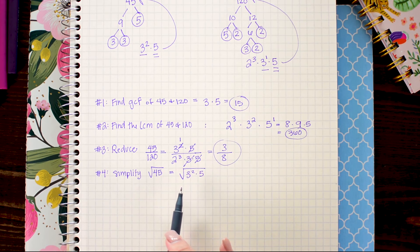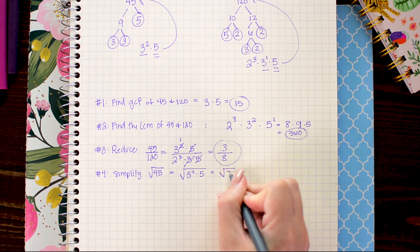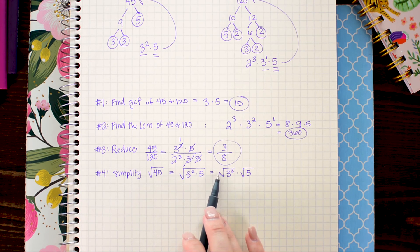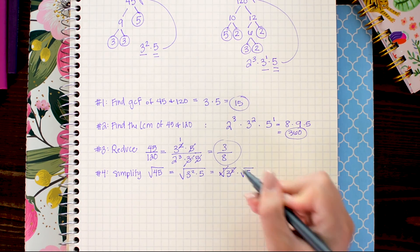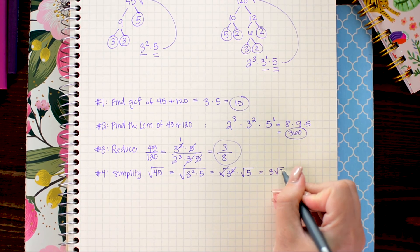And then using the rules of radicals I can split this into two separate radicals. It's really easy to see that the square root of 3 squared is simply 3. You can kind of think of it as the square root cancels out with a square power. So we get 3 square root 5.